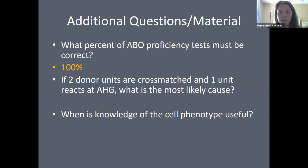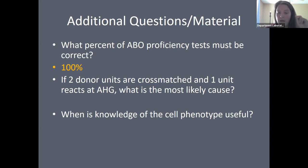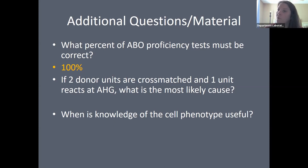If you are crossmatching two donor units and one reacts at AHG, what is the most likely cause? Two scenarios: first, the donor has a positive DAT — something is coating the donor cells, whether drug-induced or another reason. Second, the recipient has an antibody to a private antigen not included on the IAT panel, and that unit happens to be antigen positive for that private antigen.